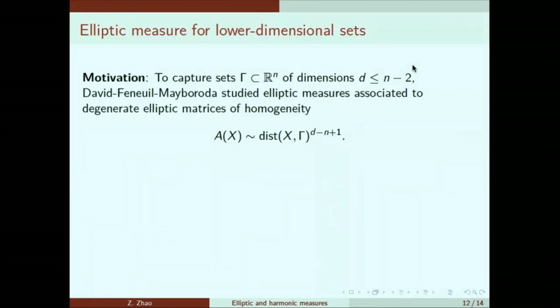In the same spirit, people also study elliptic measures of lower dimensional sets. We know that Brownian motion doesn't see sets of co-dimension greater than two. In other words, sets of lower dimensions are removable from the point of view of harmonic functions. Therefore, to capture sets of dimension less than n minus two, David, Feneuil, and Mayboroda study elliptic measures with degenerate elliptic matrix, where the homogeneity is like this. Here, D is the dimension of the boundary living in R^n. By dimension, I mean in terms of Hausdorff dimension, when I look at the D dimension of Hausdorff measure.